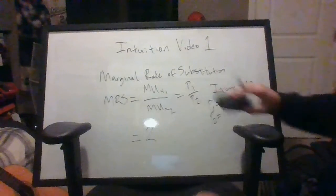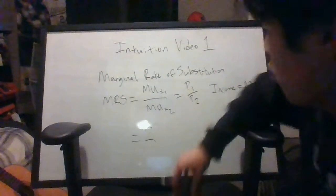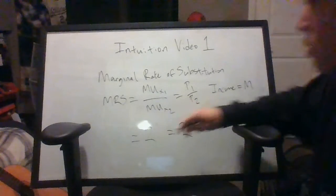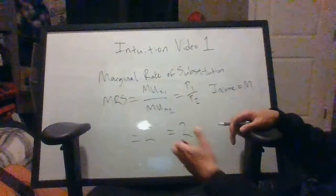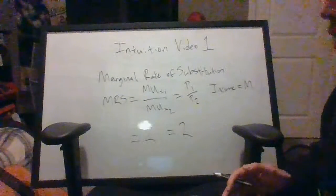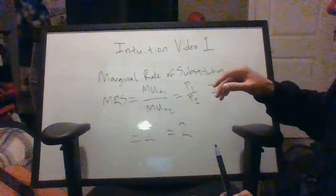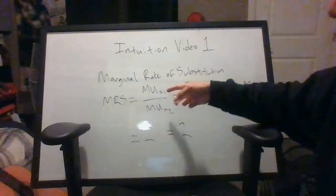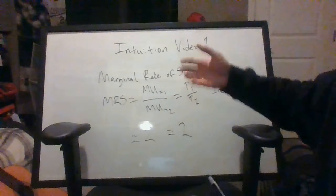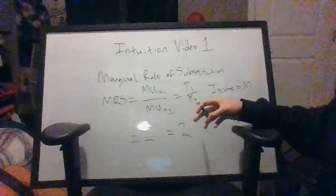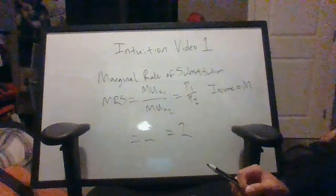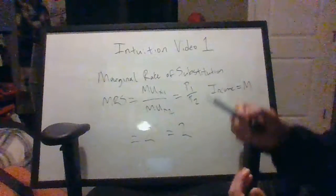And so we know that at the point where our MRS is equal to the price ratio, let's say that 2 is the MRS, this is the price ratio, and they're two and two. We know that this is kind of our equilibrium because essentially by increasing our consumption of x1 or increasing our consumption of x2, we're going to be getting the same amount of utility per dollar. And so it doesn't really matter whether we buy x1 or x2, we're not going to want to buy either one in preference over the other.